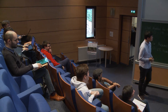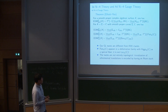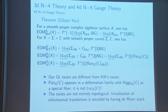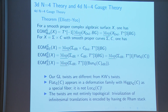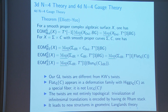From our framework, flat connections appear naturally. If you are a physicist, you may ask: we took a topological twist, so how can we see non-topological (algebraic) structures? The claim is that a topological twist is really a trivialization of infinitesimal translations, and if you know the definition of de Rham stack, it is exactly this trivialization of infinitesimal translations. So algebraic structure is captured by having the de Rham stack.